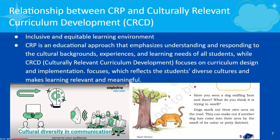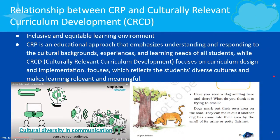There are a few examples which are given. I have taken one example from the textbook. Have you seen a dog sniffing here and there? What do you think it is trying to smell? This is a common thing in rural areas and even in cities also. Dogs mark out their own areas on the road. They can make out if another dog has come into their area by the smell of its urine or latrine. Even we see things but we do not generally notice what it is.